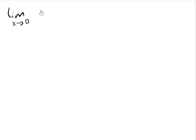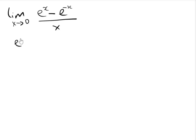Consider this example: the limit as x approaches 0 of e^x minus e^(-x) divided by x. To solve this, we have to make some assumption. Remember that e^x minus 1 divided by x as x approaches 0 gives 1. This is Equation 1.